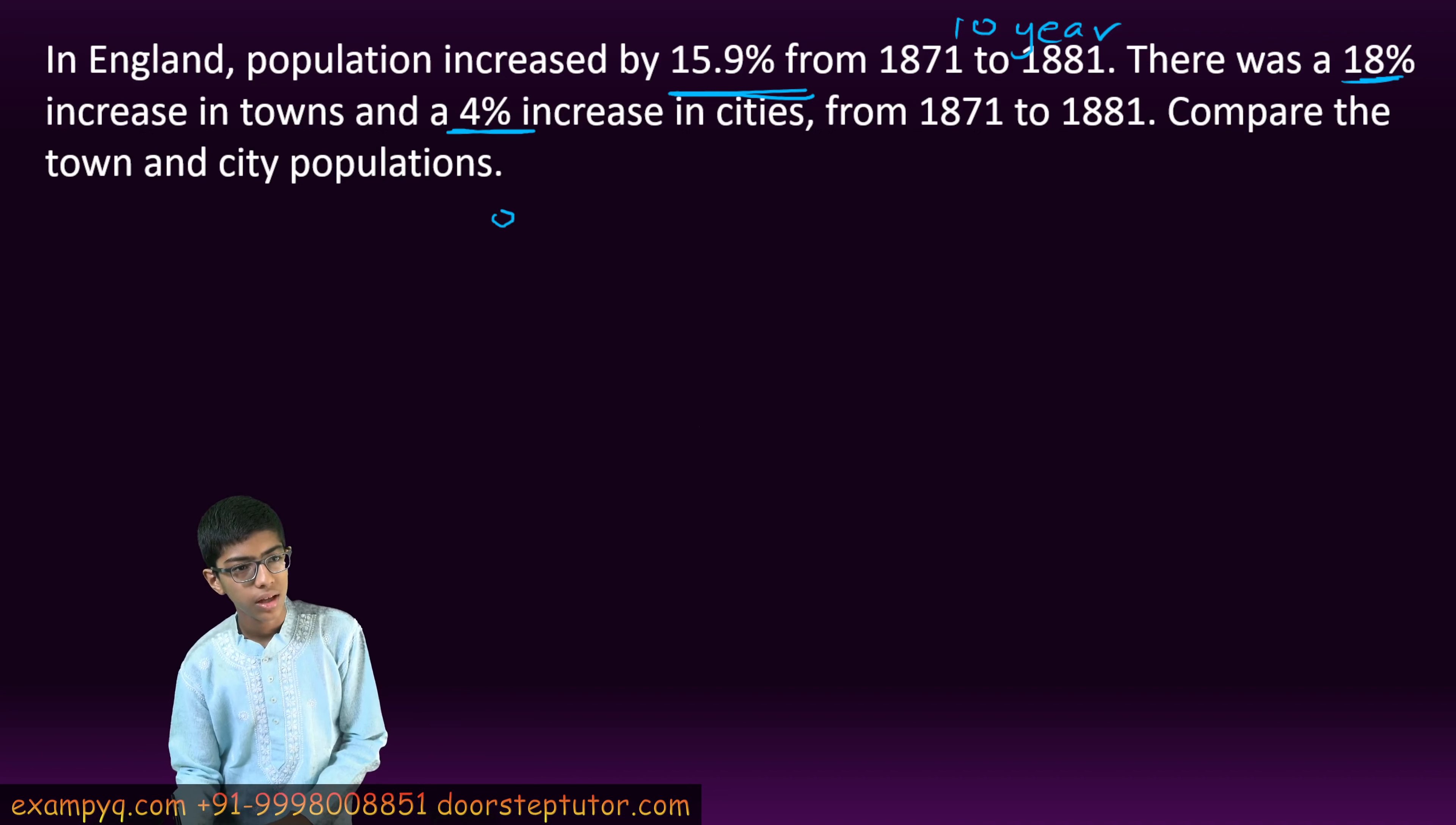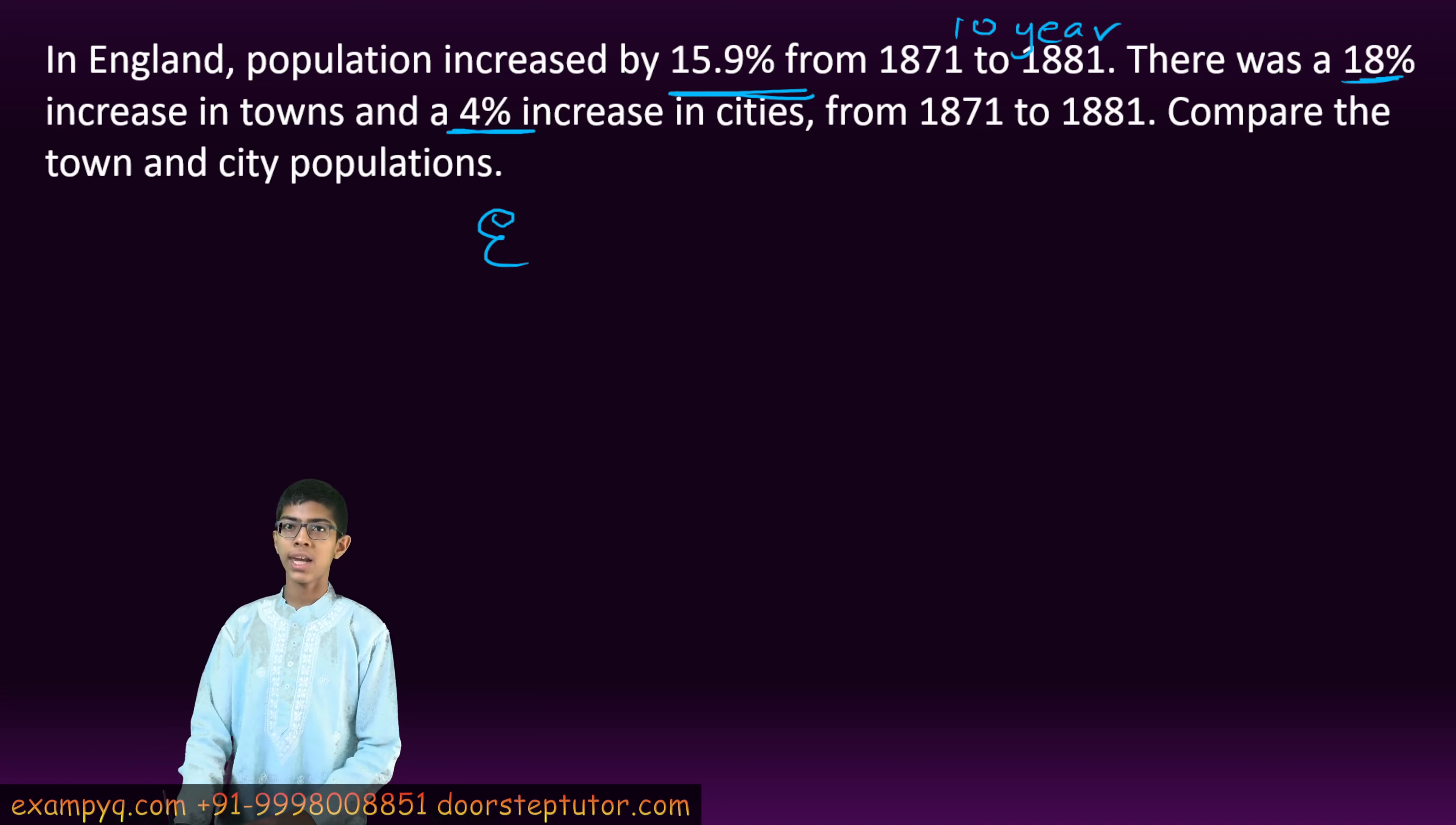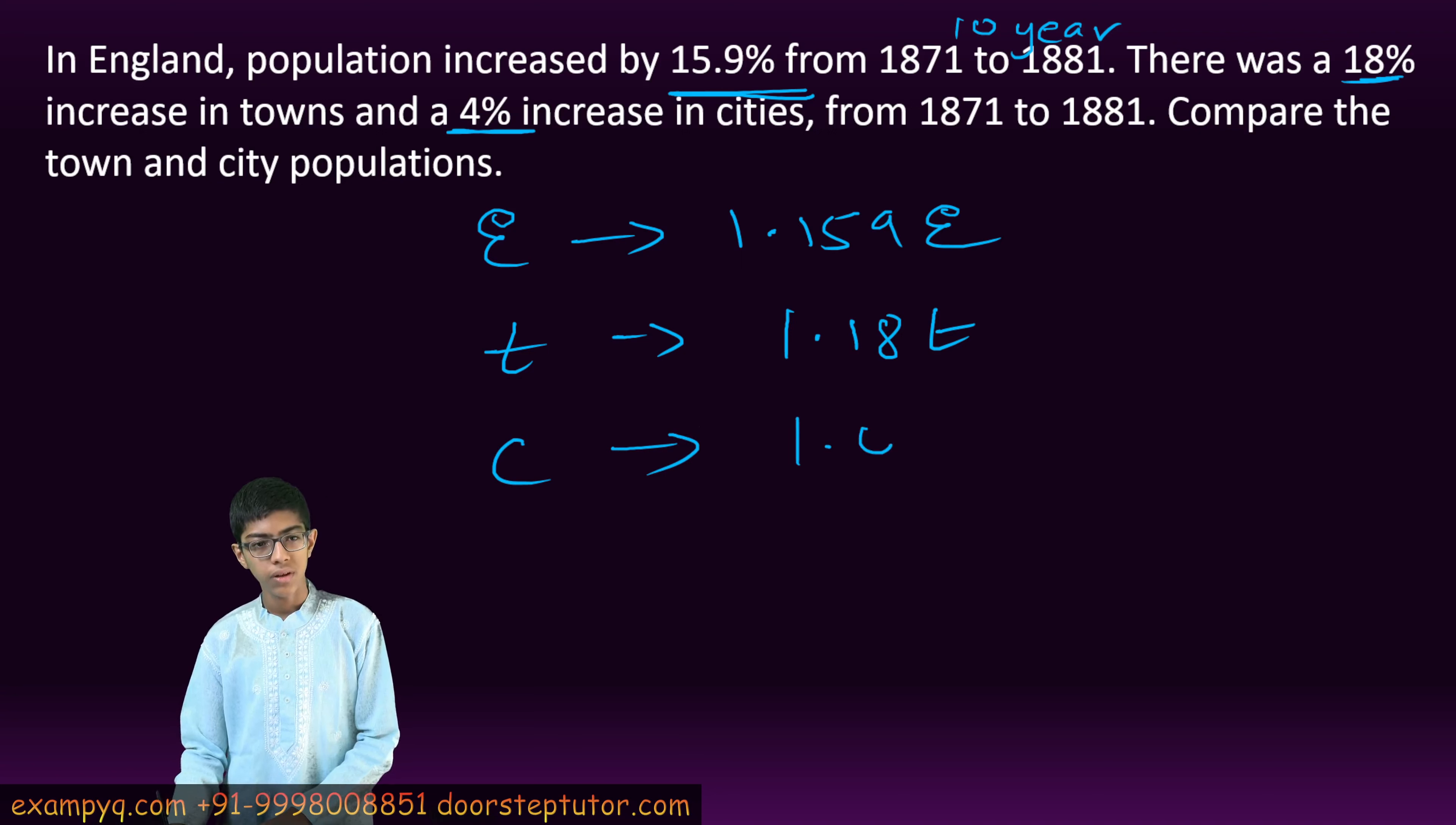according to the question, assuming the population of England to be E, it becomes 1.159E. The town population, assuming it to be T before, becomes 1.18T. And assuming the city population to be C, it becomes 1.04C.